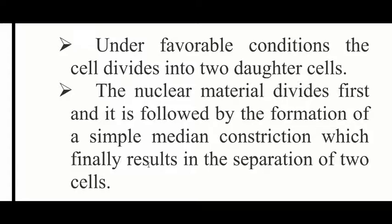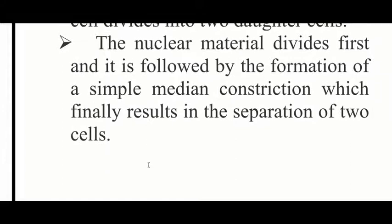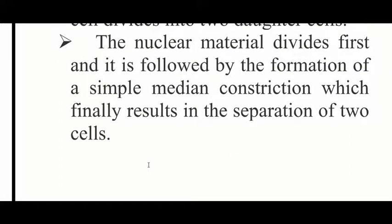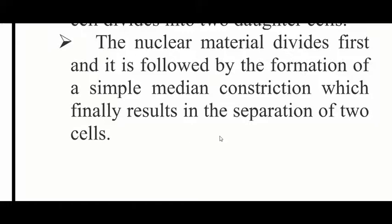The cell elongates and the chromosome duplicates. The daughter chromosomes move to opposite poles. The cell wall invaginates around the middle of the cell to form a septum, then the cell divides into two cells. The mesosome is actively involved in the formation of the septum.